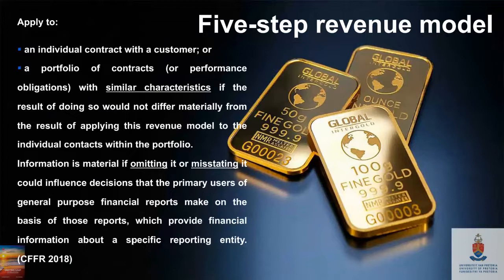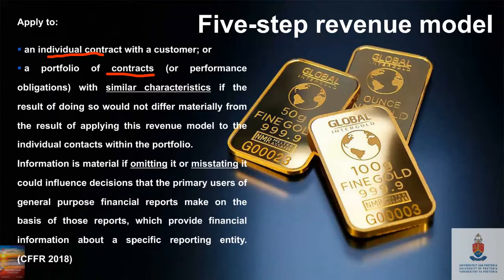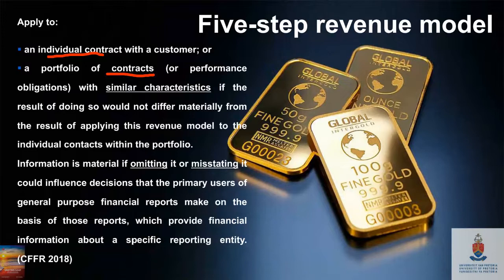Lawyers sometimes write contracts in a way that misleads accountants into thinking there are multiple performance obligations when there is really only one. We need to look for contracts that are similar in timing, involve the same customer, and have the same commercial substance — and we can combine them into one contract. We can apply the five-step model to one contract or to a group of combined contracts.